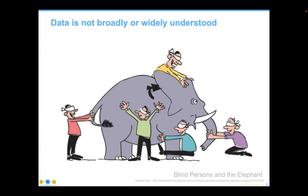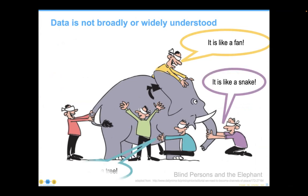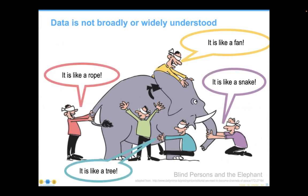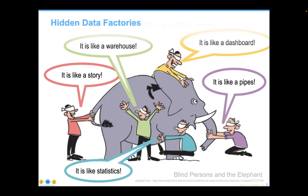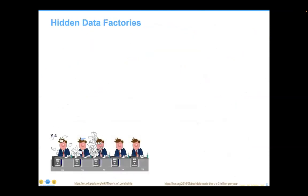Data is not broadly or widely understood outside of our circles, or perhaps even within it. It's kind of the blind persons and the elephant, where different parts of the elephant appear differently to different people at different points in time. Data comes across the same way — there are many different perspectives that people have on it. None of them are necessarily wrong, but having an incomplete picture does limit our abilities.